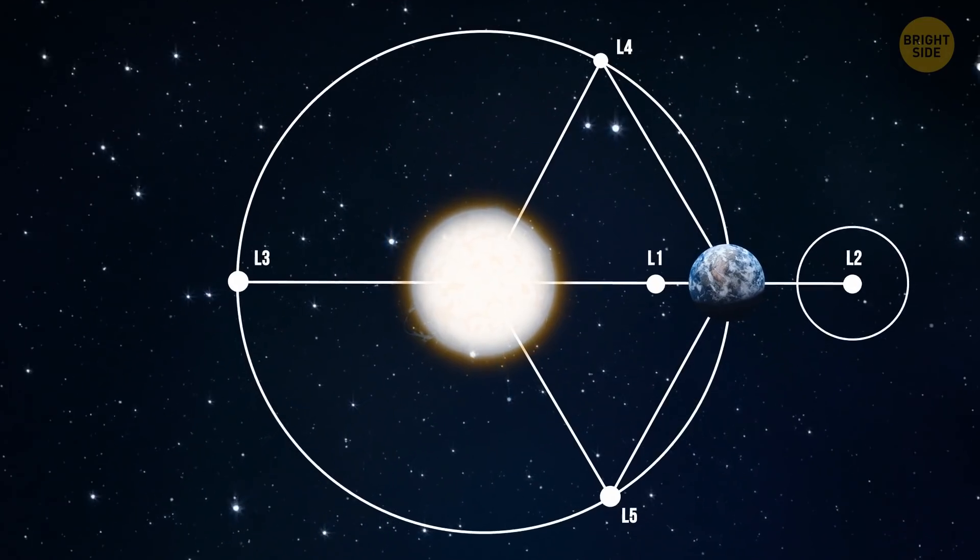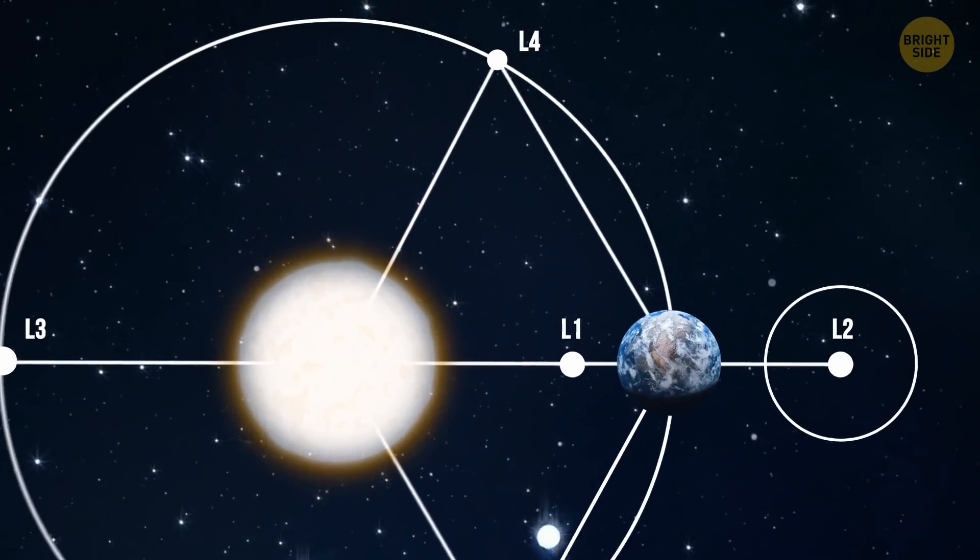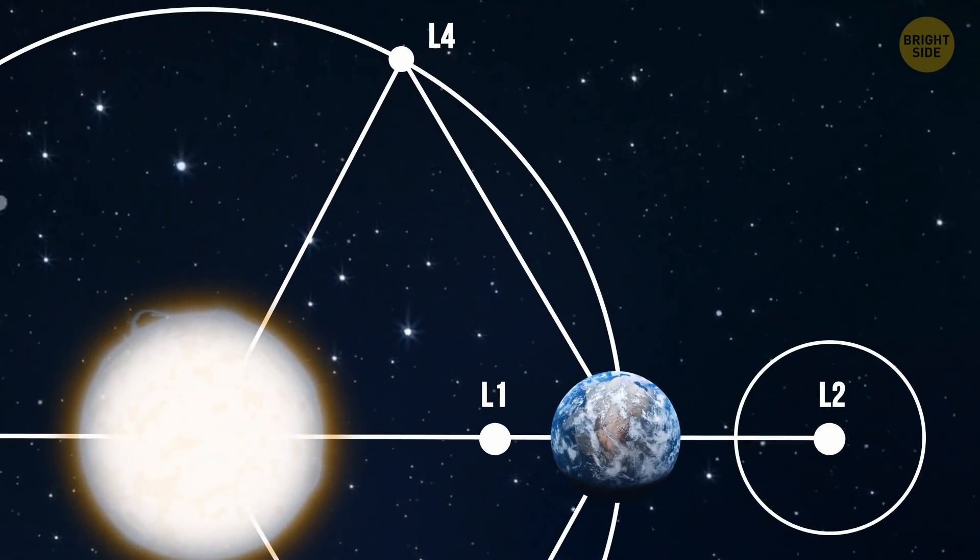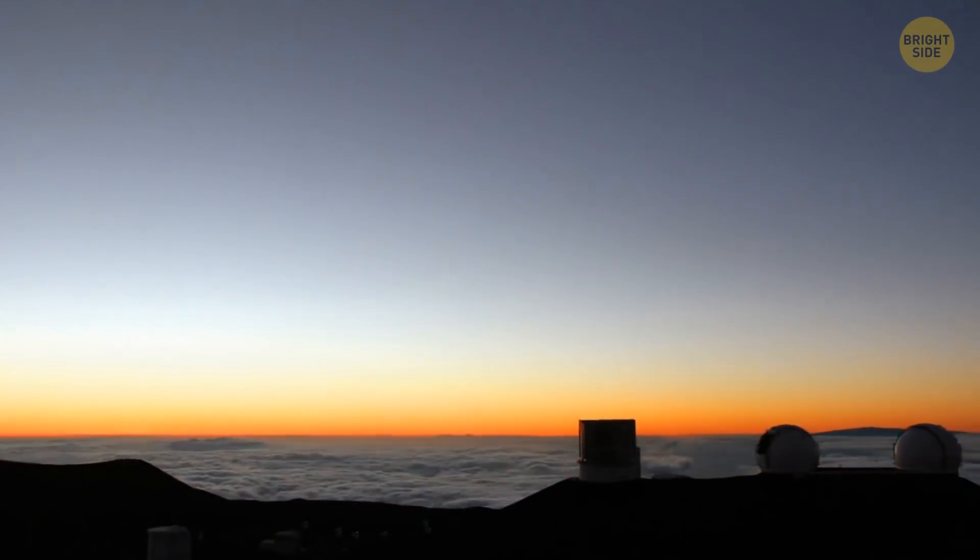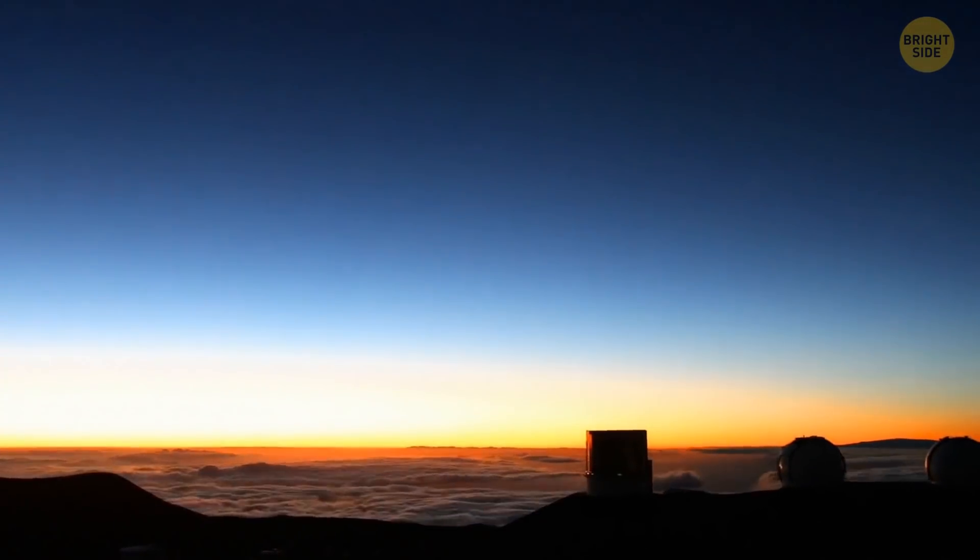The Webb is parked at L2, the second of the five Lagrange points, which lies 932,000 miles out into space, way beyond the Moon. All this to observe a spot of infrared light.